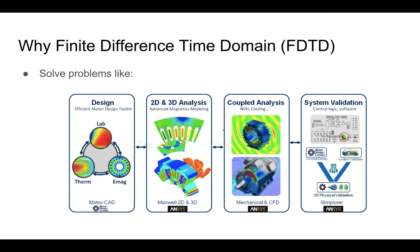So then why do we need the finite difference time domain method? It's because we need to solve complex problems. In some practical problems, it's impossible to fit the Maxwell equations to the geometry of practical problems. Calculated by hand, Maxwell equations are really useful in simple geometries, but in industry, a lot of complex geometries are used — not easily solvable and sometimes requiring a lot of computing power. So we need a way to translate the Maxwell equations into a form of approximation.